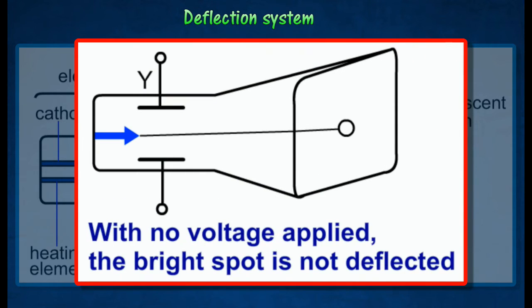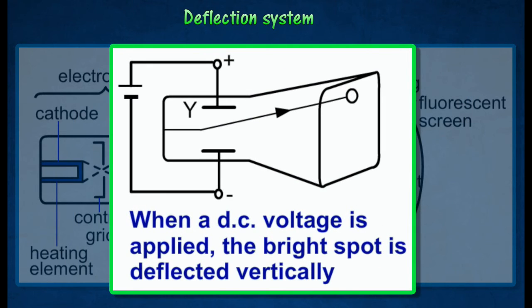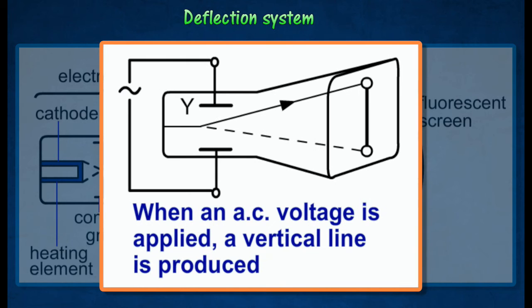When no voltage is applied, the bright spot is not deflected. When a direct current voltage is applied, the bright spot is deflected vertically. When an alternating current is applied, a vertical line is produced.